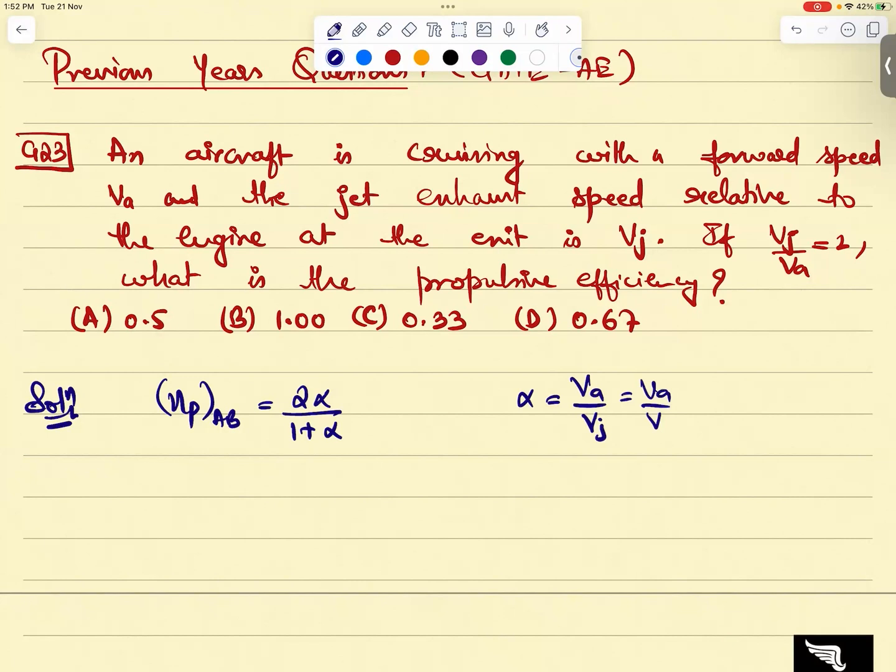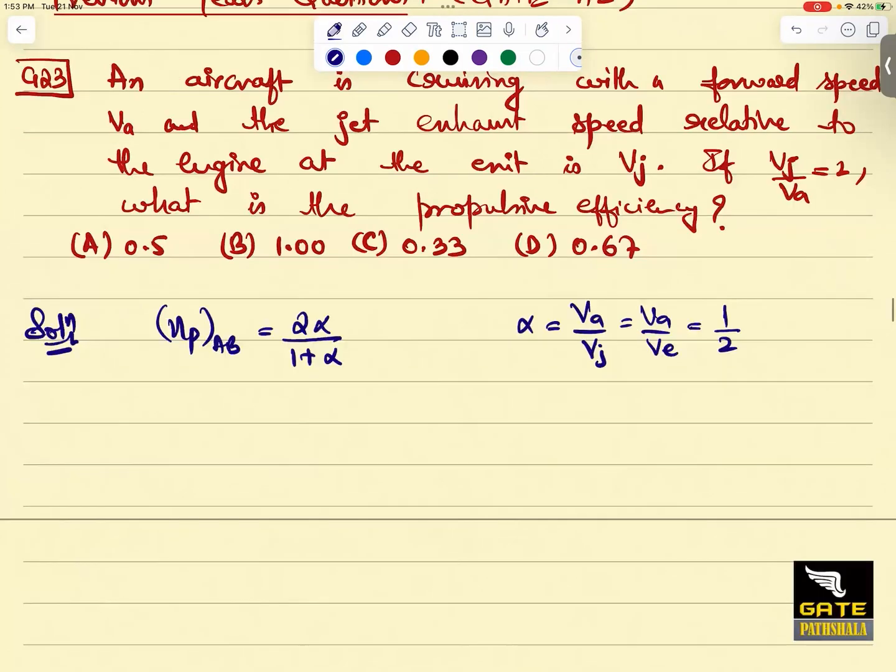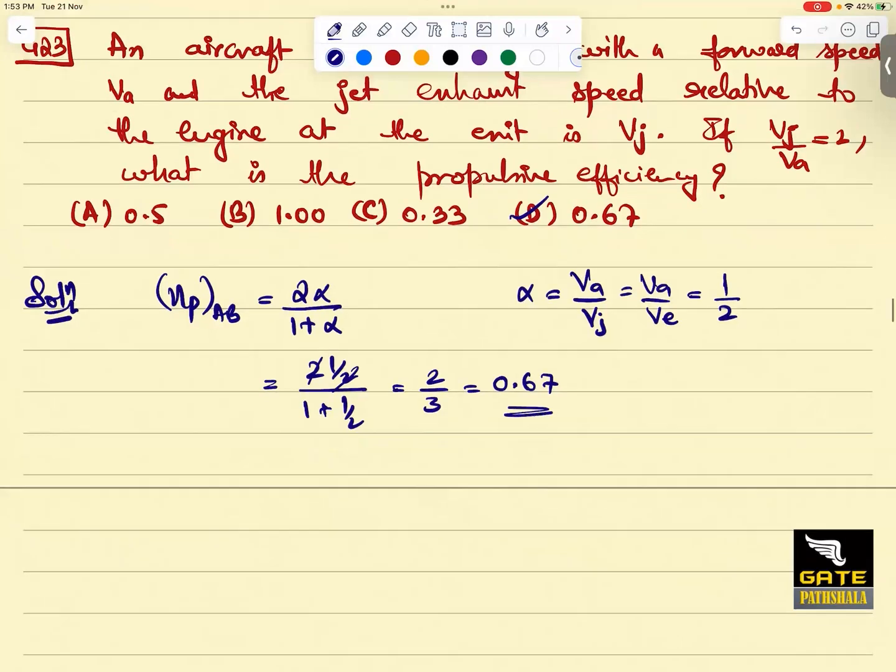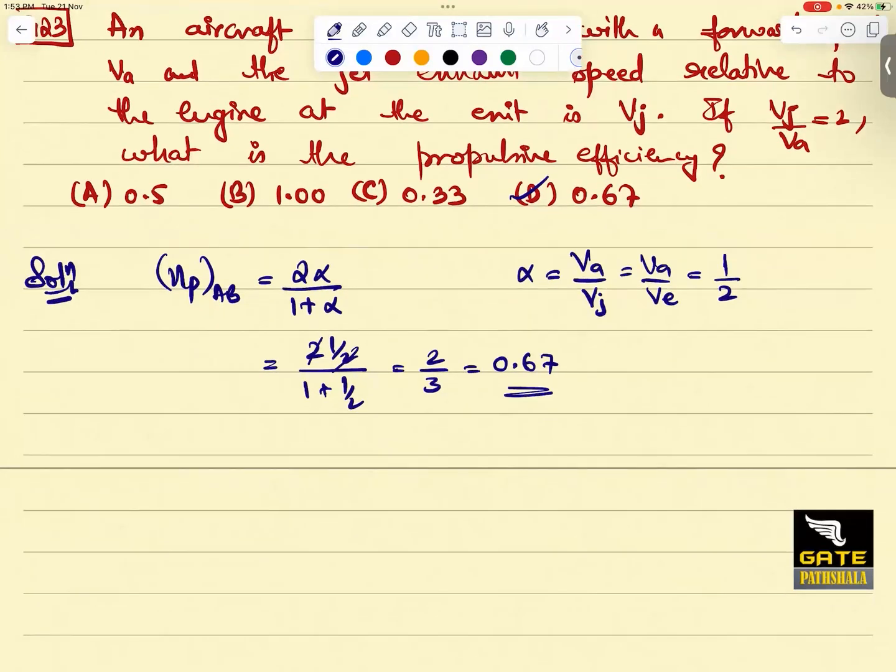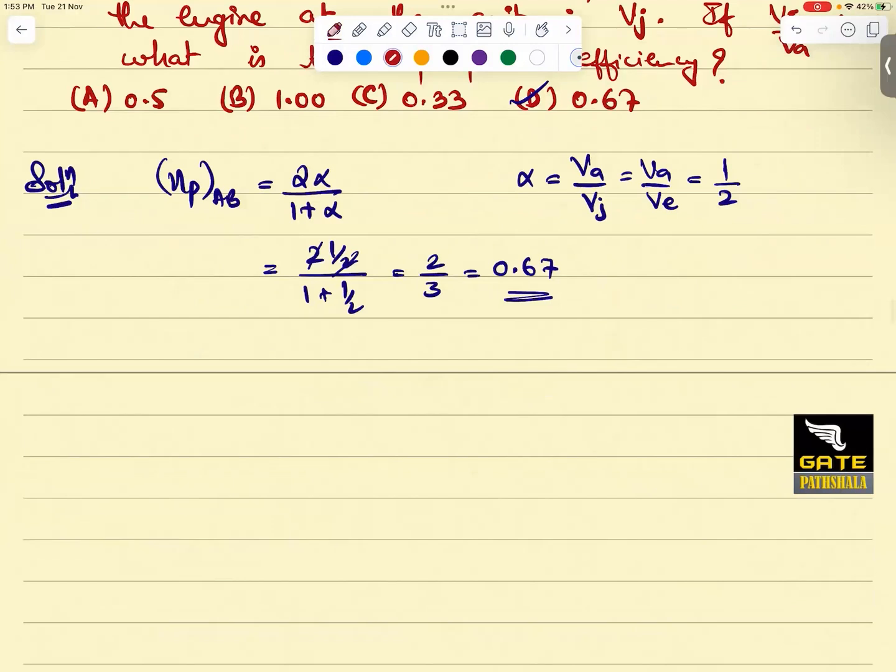VA by Vj, with your notations. So what is this? Alpha is 0.5. So if you put 0.5 or write 1/2, that will become 1 by 2 divided by 3 by 2, that is 0.667 or 0.67. Hope it is clear. Everybody got that. Though it is not a question, in fact propulsive efficiency, jet propulsion ka bhi air breathing engine ka bhi question khatam ho gaya.